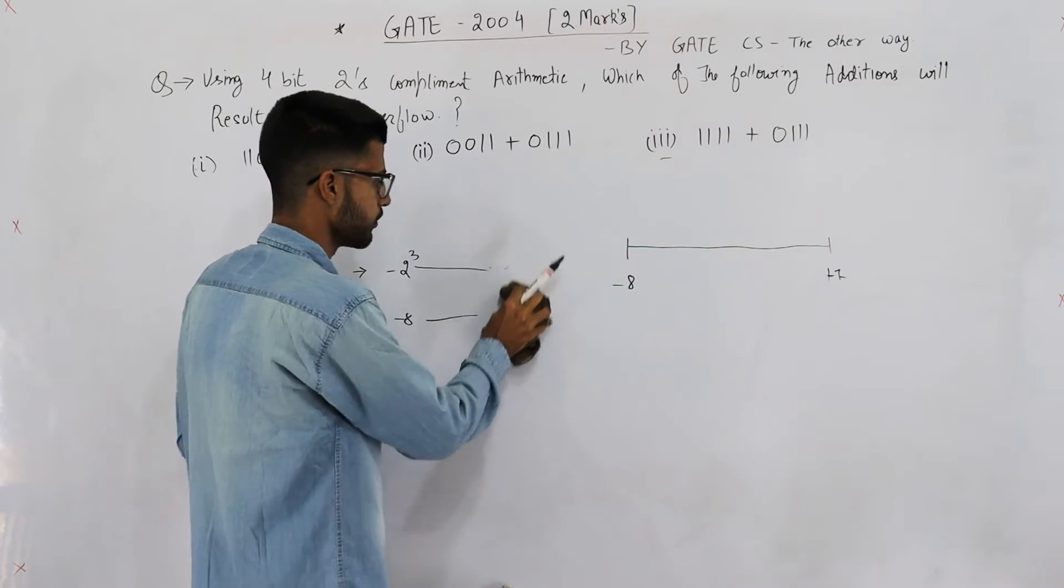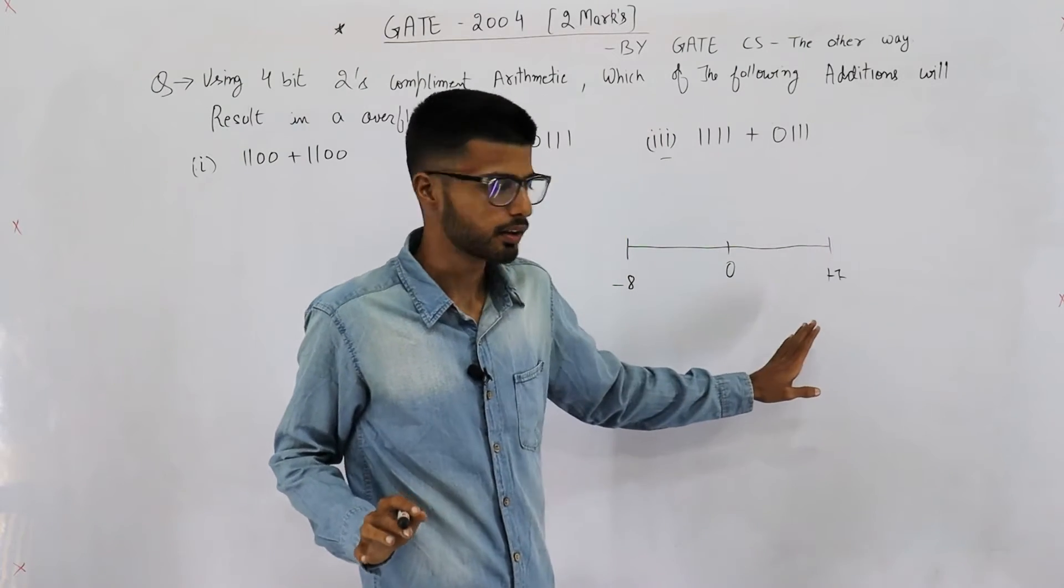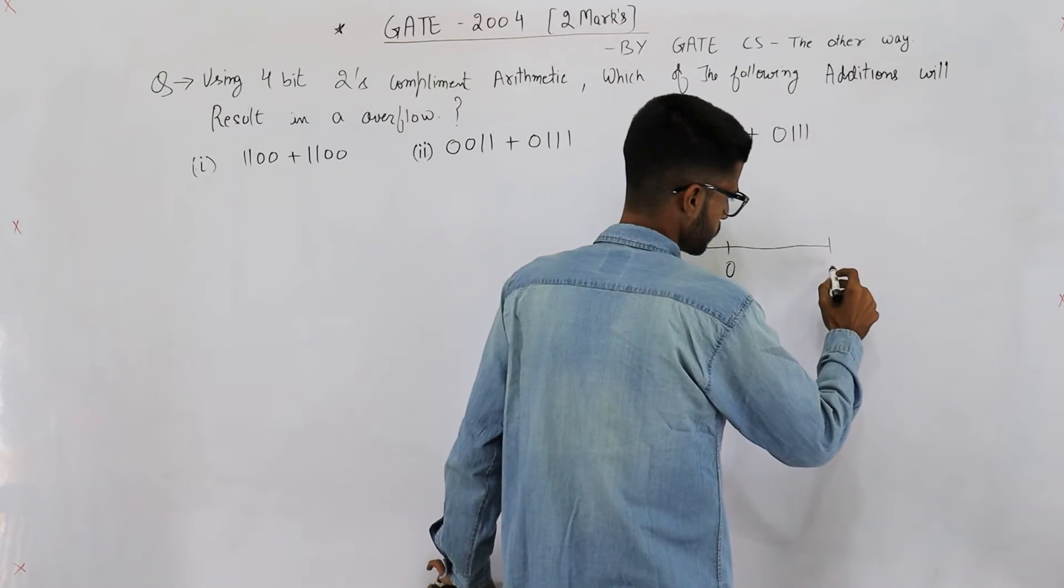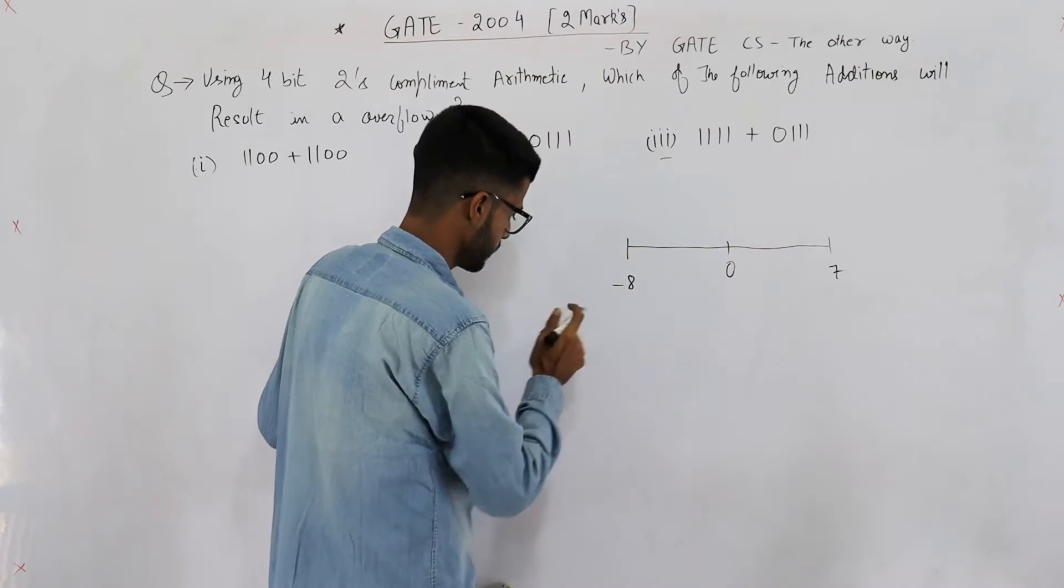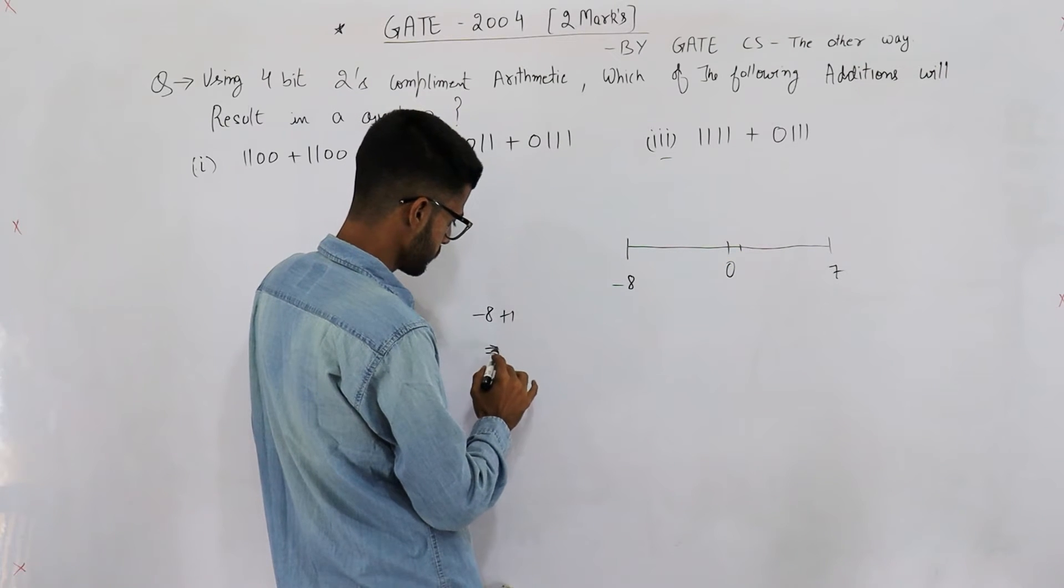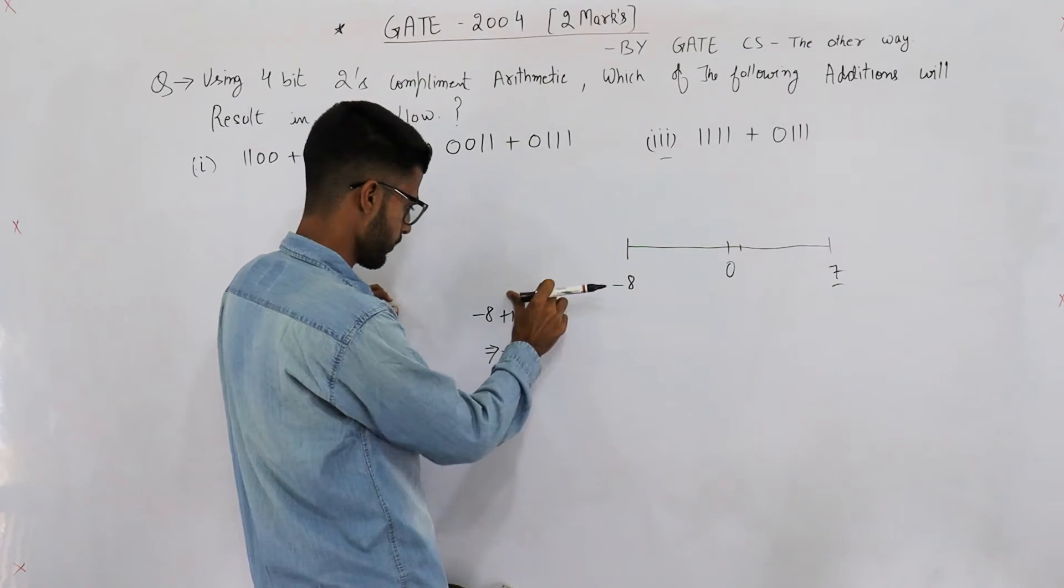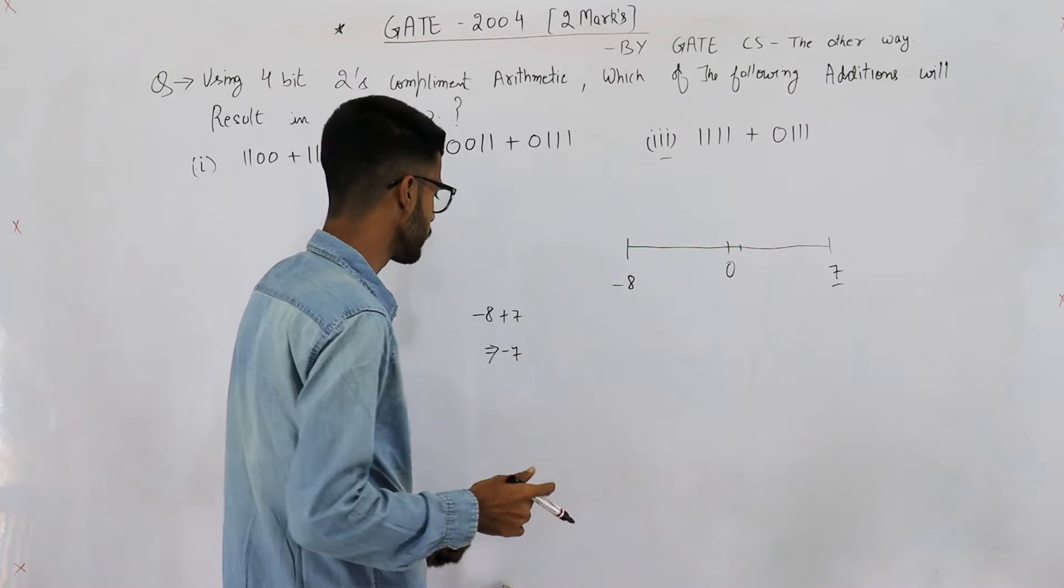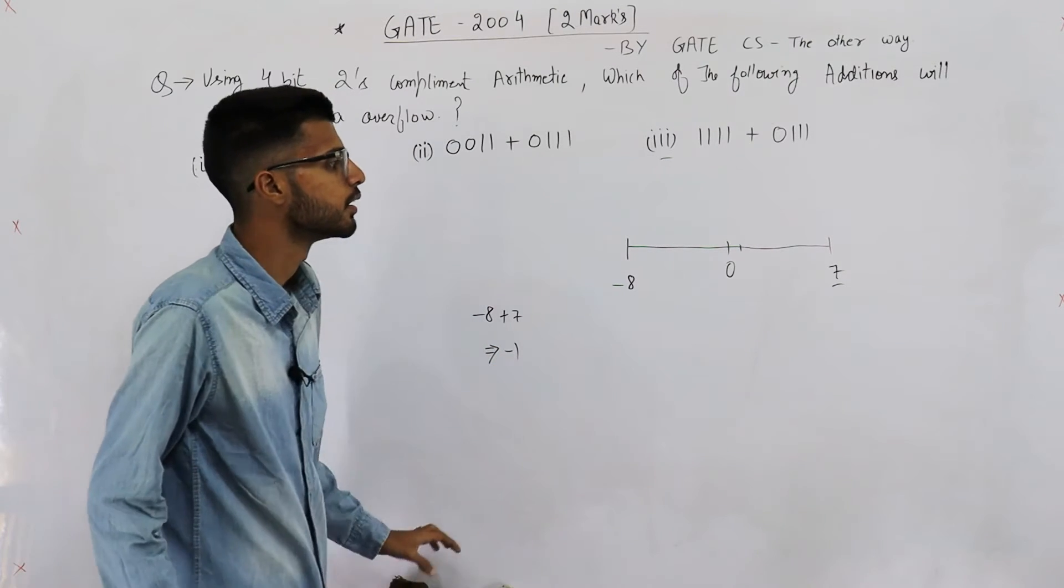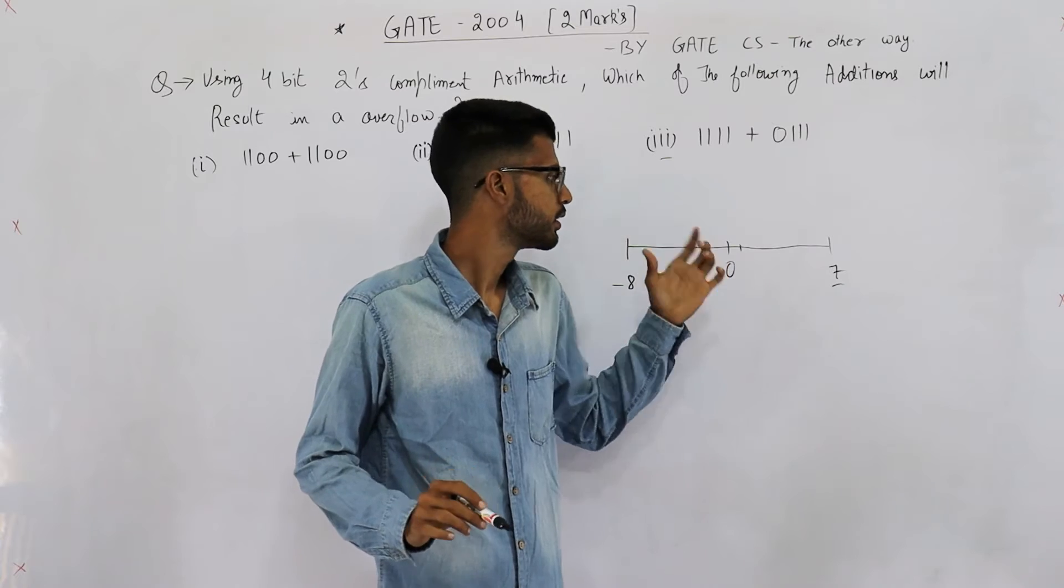You pick any negative number from this range and add it with any positive number; you cannot get overflow ever. Let's see: this is +7. If we take -8 and add any positive number, say 1, the answer is -7, which is in this range. If we add 7 to it, still the answer is going to be in the range.